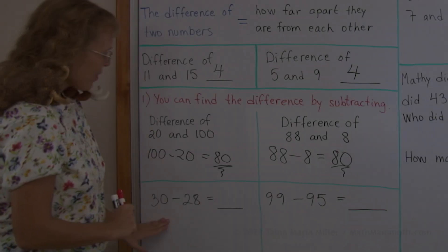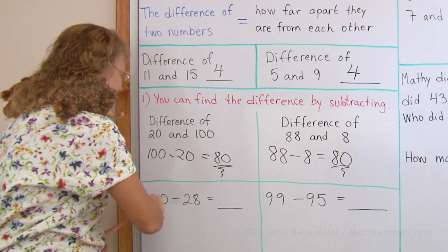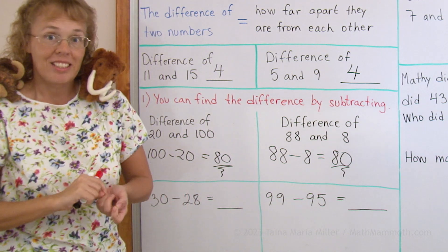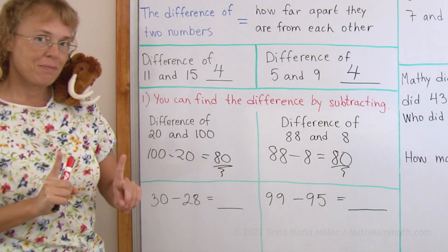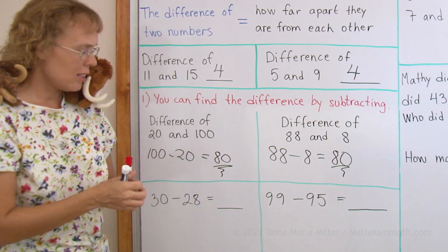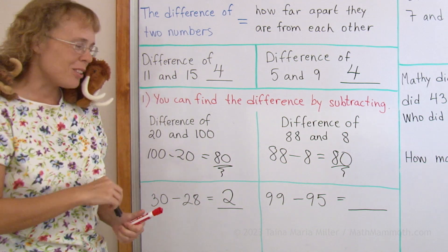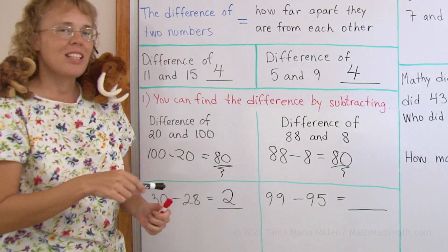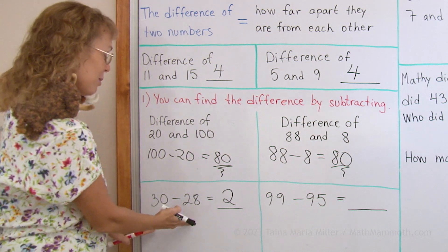Now here I have a subtraction problem, but I'm going to think of it as difference. How far apart are these two numbers from each other? Just two steps. So the answer to the subtraction is 2. In other words, this time I'm using the idea of how far apart are the numbers to solve the subtraction.